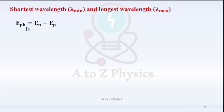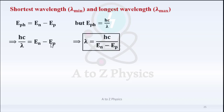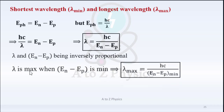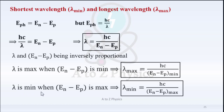Whether the transition is upward or downward, the energy of the photon is equal to EN minus EP. Since the energy of the photon equals Hc over lambda, we have Hc over lambda = EN minus EP. This implies lambda equals Hc over (EN minus EP). Lambda is maximum when EN minus EP is minimum, and lambda is minimum — the shortest wavelength — when EN minus EP is maximum, equal to Hc over (EN minus EP) max.